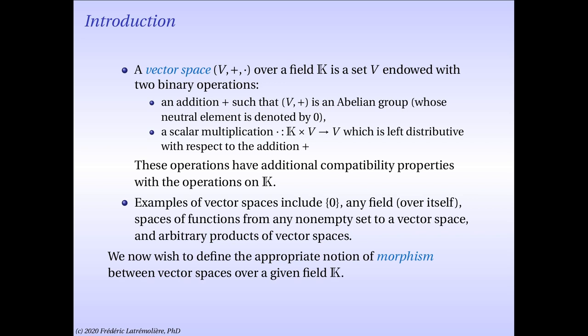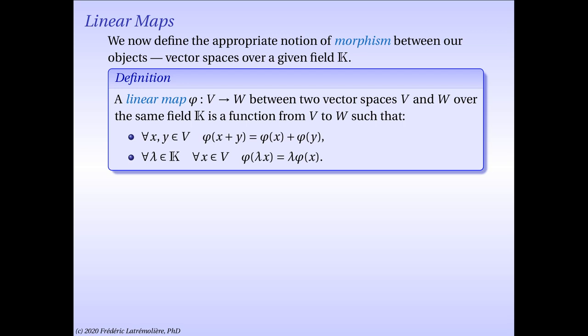We now wish to define the appropriate notion of morphism between vector spaces over a given field K. A linear map phi from V to W between two vector spaces V and W over the same field K is a function from V to W such that, for all vectors x and y in V, phi of x plus y equals phi of x plus phi of y, and for all scalar lambda and all vector x in V, phi of lambda times x equals lambda times phi of x.